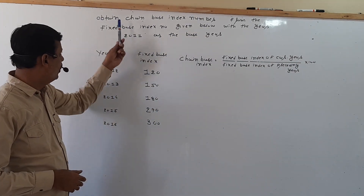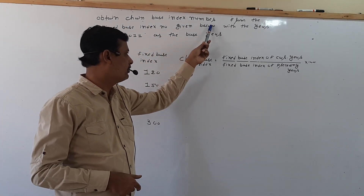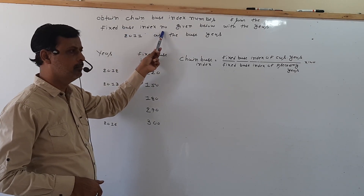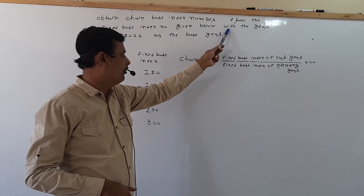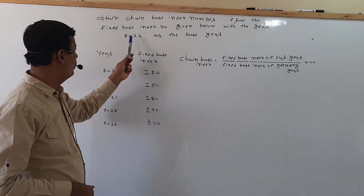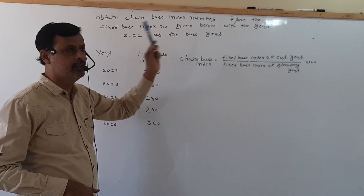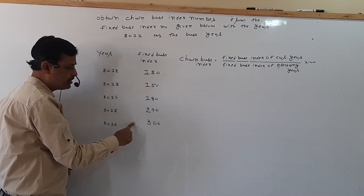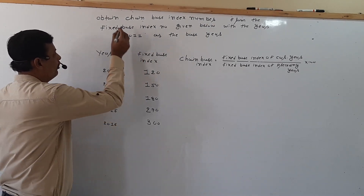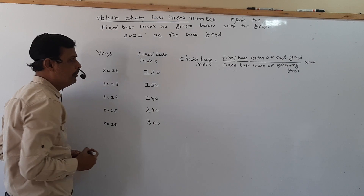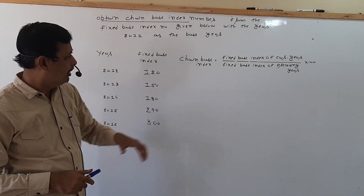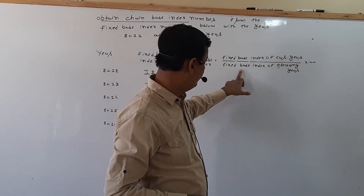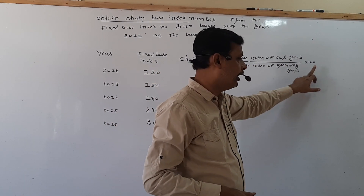Obtain the chain base index numbers from the fixed base index numbers given, with the year 2011 as the base year. The formula is: chain base index equals fixed base index of current year upon fixed base index of preceding year, into 100.